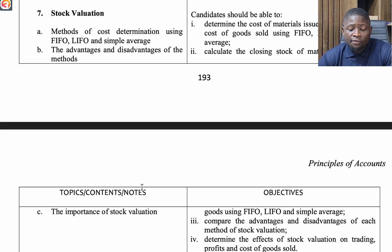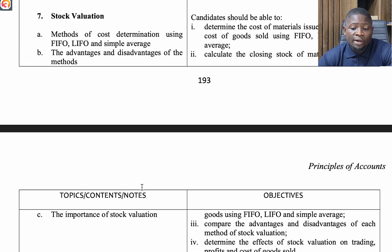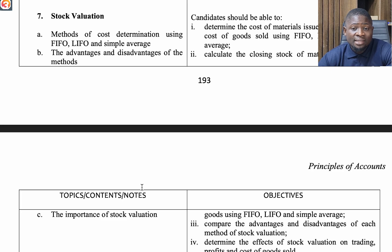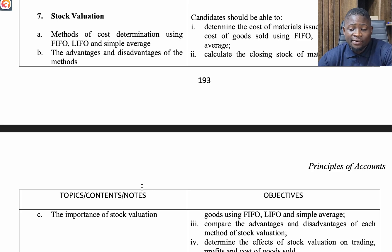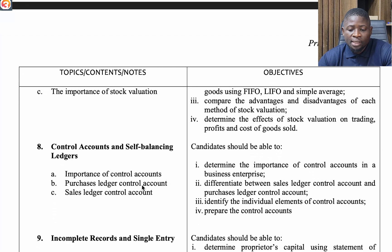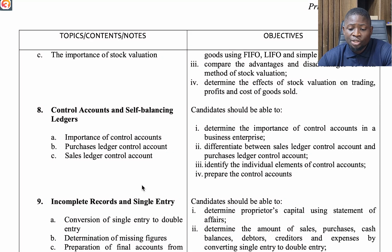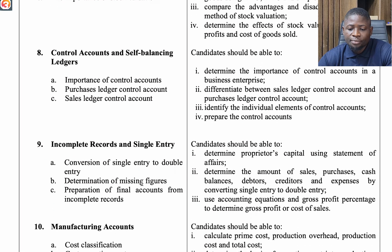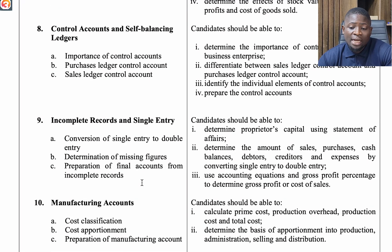The seventh topic is Stock Valuation. Under this, look at methods of cost determination using FIFO, LIFO, and simple average, the advantages and disadvantages of each method, and the importance of stock valuation. The eighth topic is Control Accounts and Self-Balancing Ledgers — look at the importance of control accounts and the purchases ledger control account.